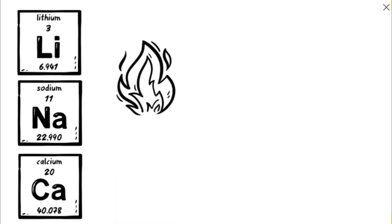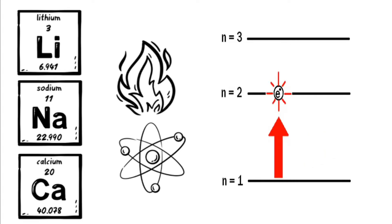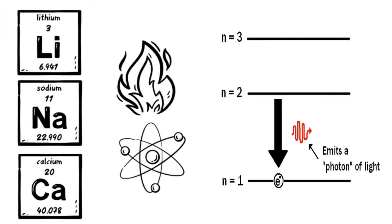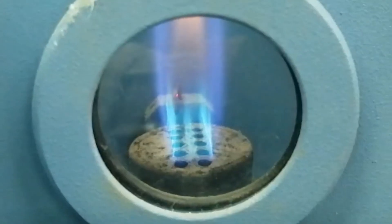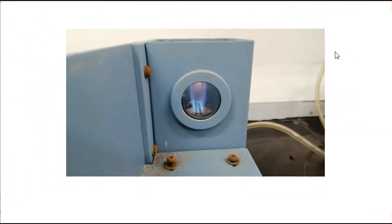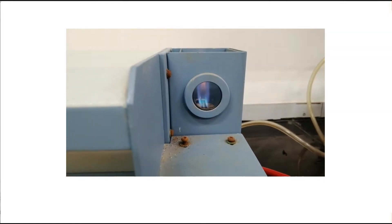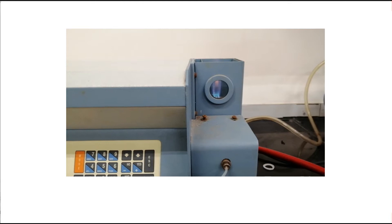Some of the atoms produced will be further excited to a higher energy level. When these atoms return to the ground state, they emit radiation which is mainly in the visible region of the spectrum. Flame photometry works by measuring the intensity of light emitted when the element is exposed to a flame. Each element emits light of a characteristic wavelength, the intensity of which is directly proportional to its concentration.